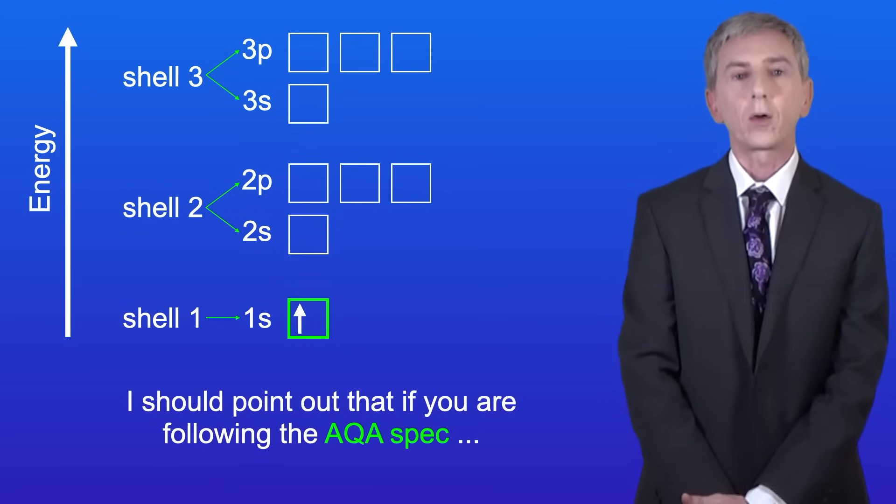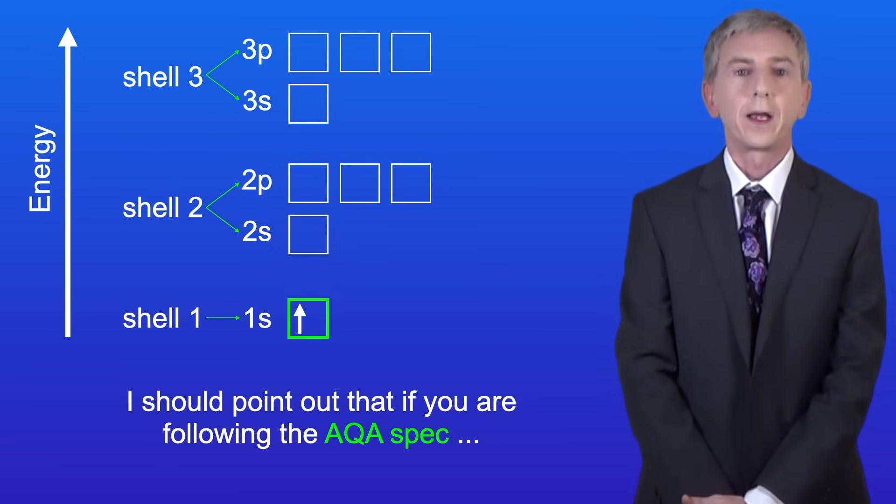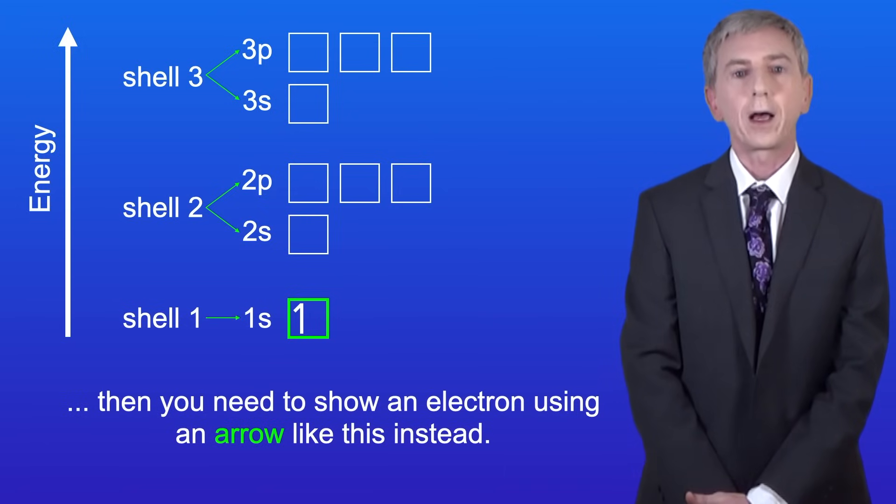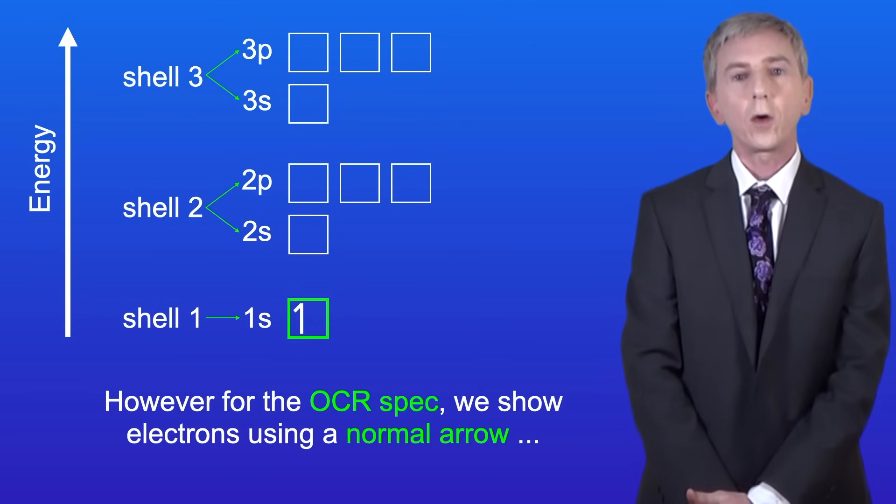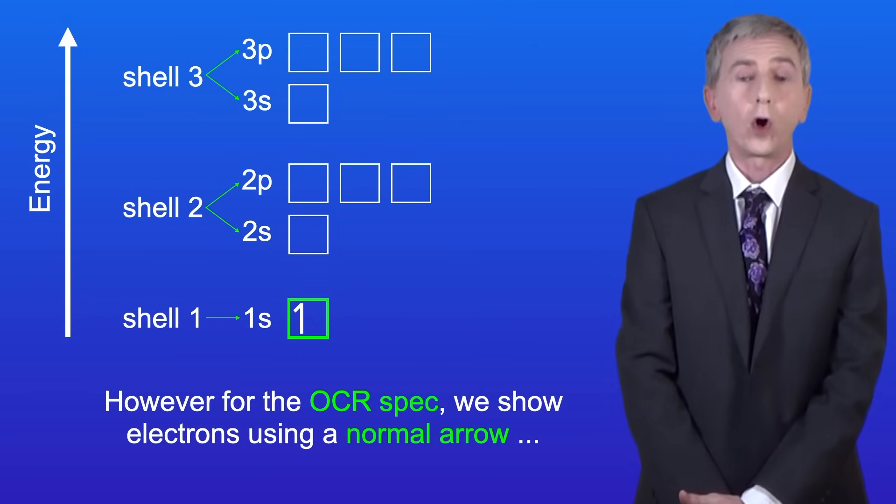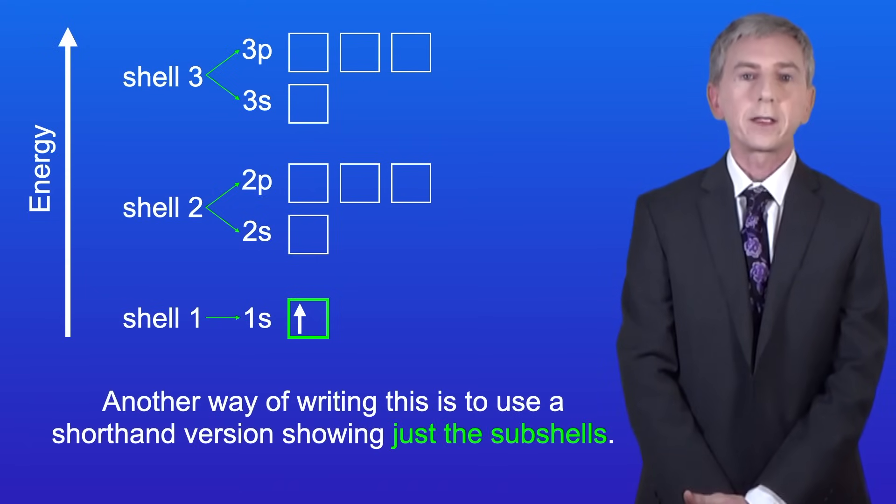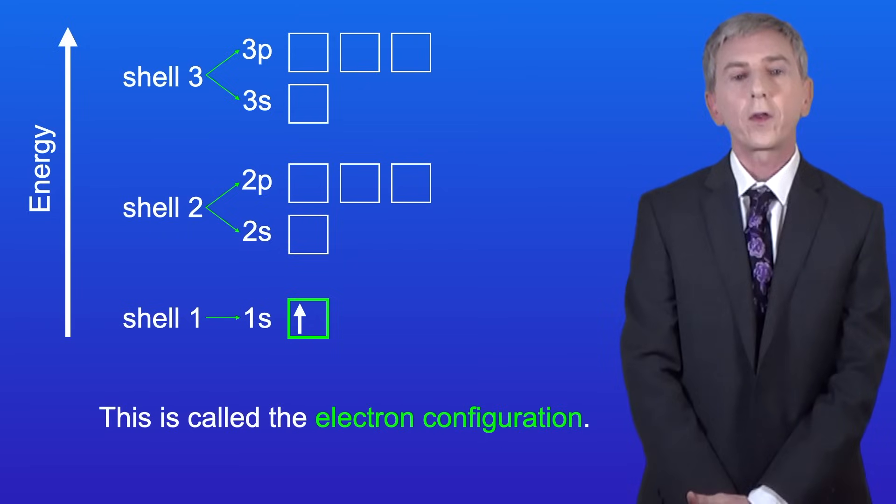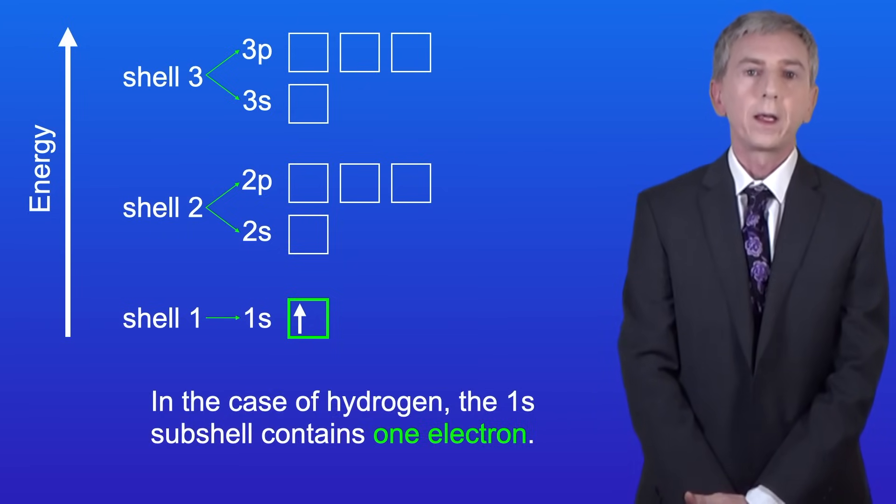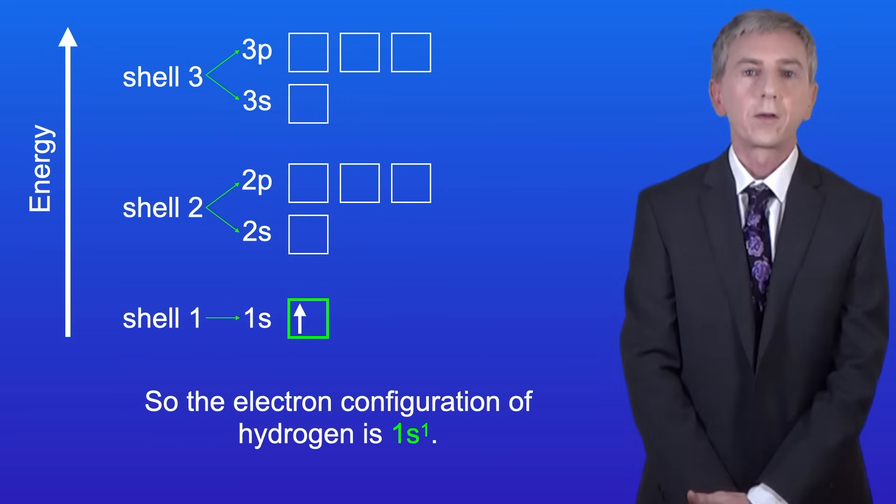Now, I should point out that if you're following the AQA spec, then you need to show an electron using an arrow like this instead. However, for the OCR spec, we show electrons using a normal arrow, which is what I will use. Now, another way of writing this is to use a shorthand version showing just the subshells. This is called the electron configuration. In the case of hydrogen, the 1s subshell contains one electron, so the electron configuration of hydrogen is 1s1.